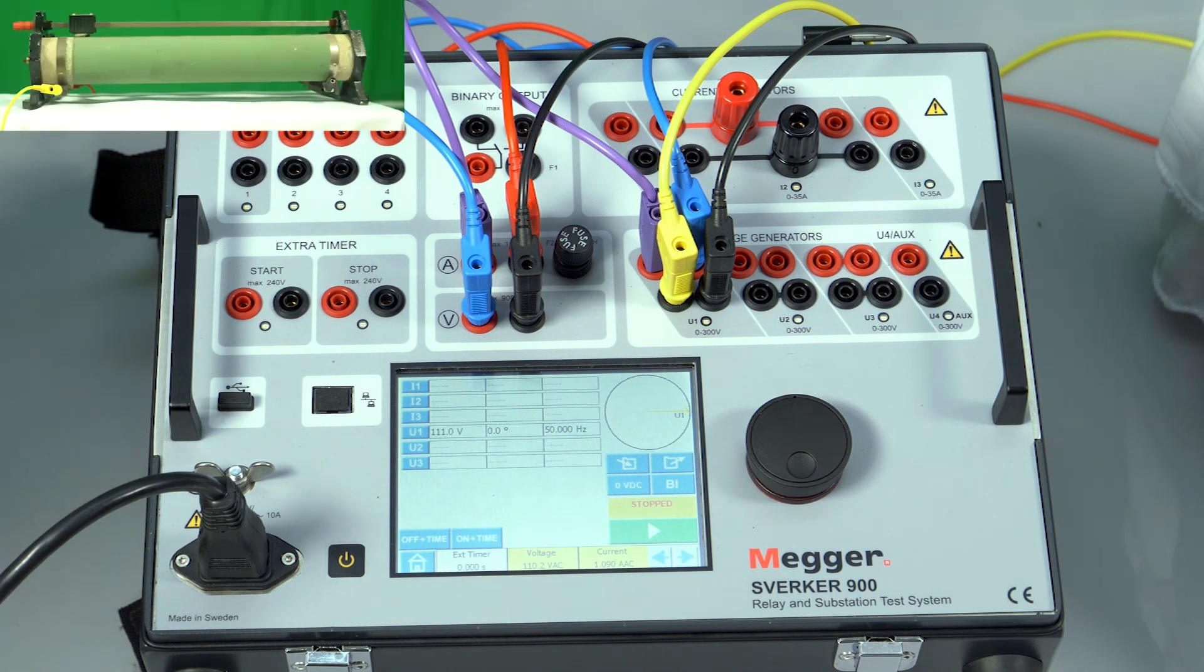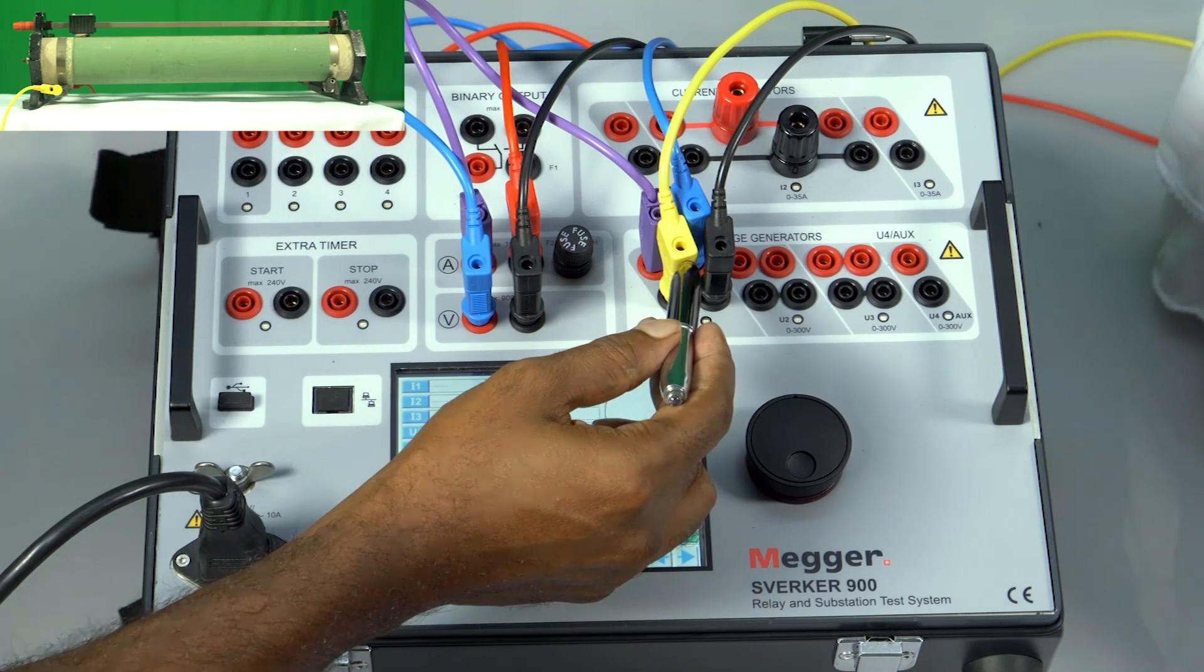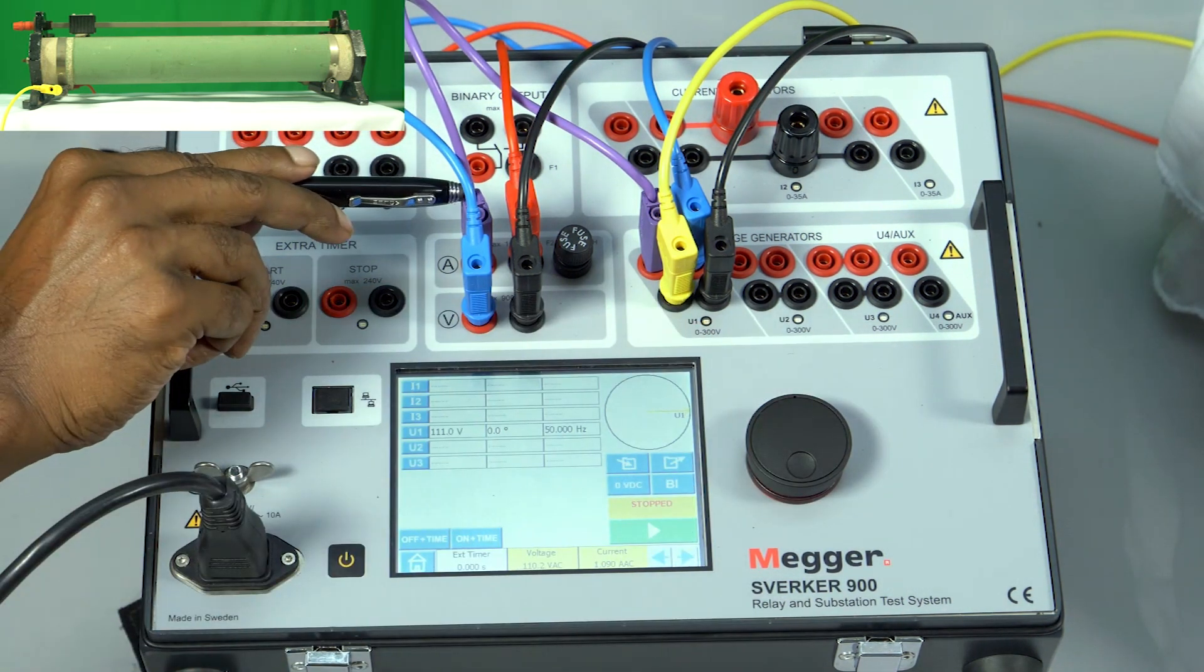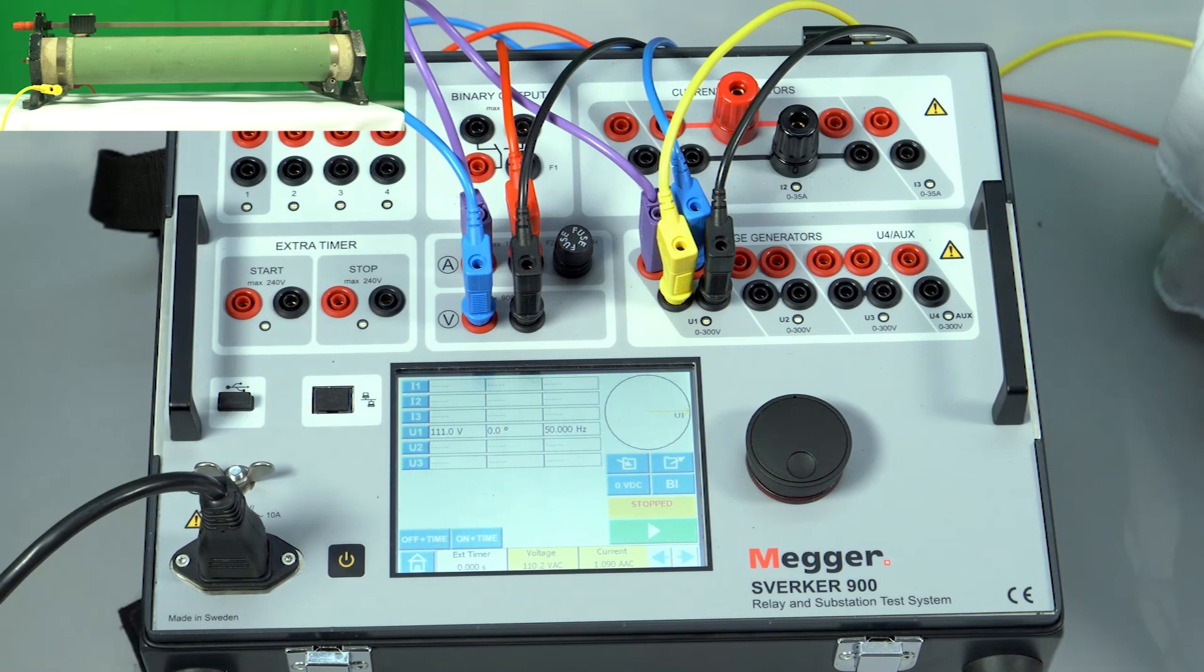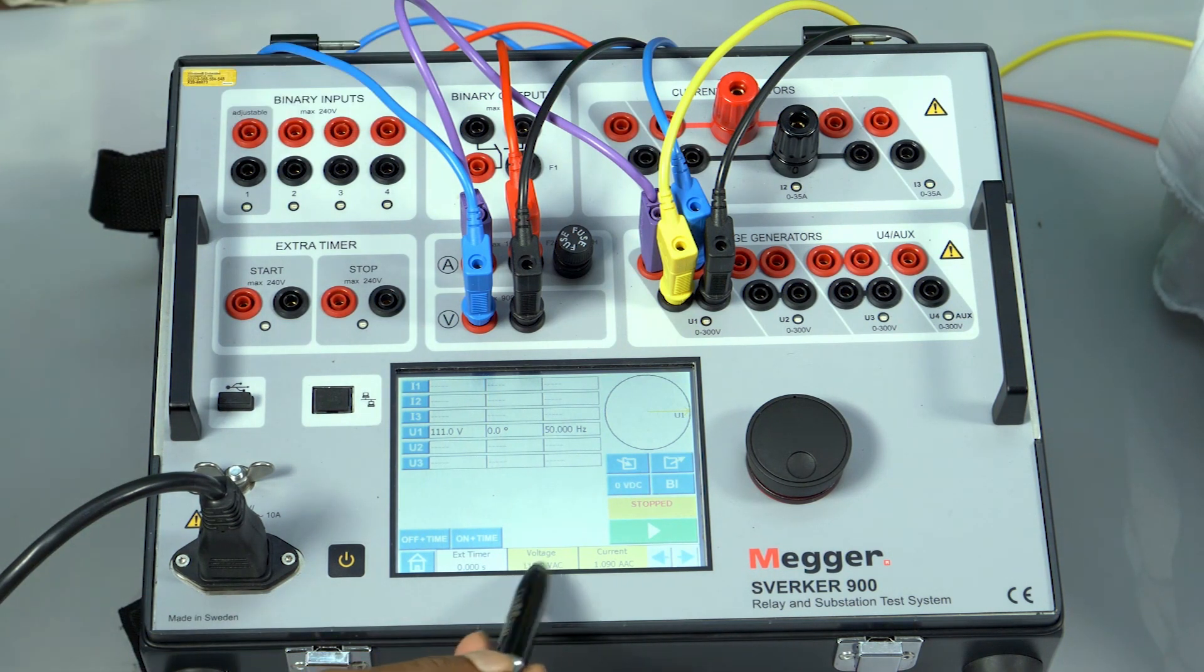Let us verify the VA by connecting a 100 ohms resistance and applying 111 volts across it. One phase is connected to the rheostat with 100 ohms. The ammeter is connected in series and the voltmeter in parallel. The voltage and current are configured for AC to hold on stop.